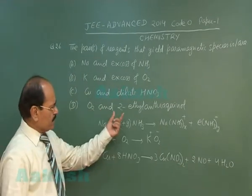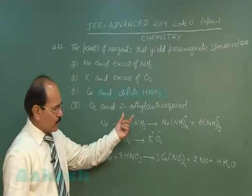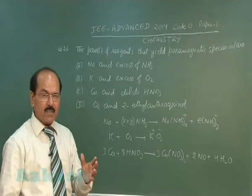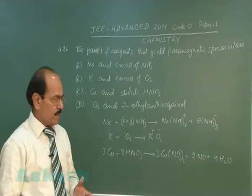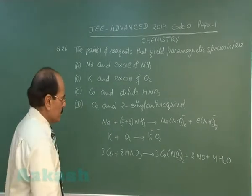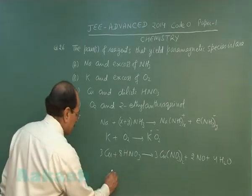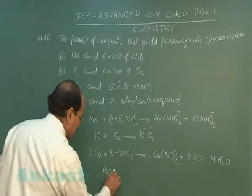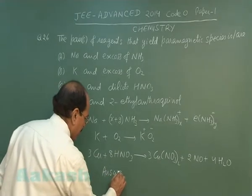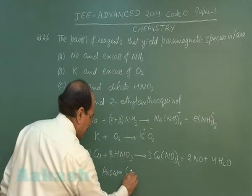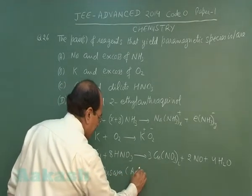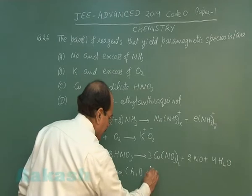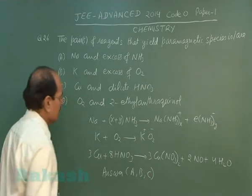Oxygen reacts with 2-ethyl anthraquinol to give hydrogen peroxide, which is diamagnetic. So the correct answer to this question is A, B, and C.